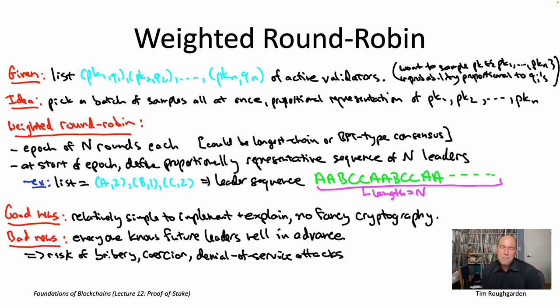So a couple comments about the perils of leaders being predictable well in advance. I've framed it as a bug. Some blockchain protocols actually treat it at least partially as a feature as well, to enable sort of better coordination and optimization amongst honest validators. For example, if you're an honest validator and you're not the leader, but you've heard about some transactions and you think other people maybe haven't heard about, there's no need to broadcast those transactions to everybody. You can just forward them to the node that you know will be the next leader, that you know will be assembling the next block. A second comment is you could imagine scenarios where maybe these threats aren't so worrisome, coercion, bribery, and DOS attacks.